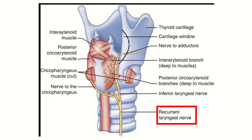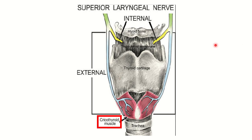In this picture we can see the cricothyroid muscle — the muscle that attaches from the cricoid cartilage to the thyroid cartilage. We can see it is supplied by a nerve that arises from the superior laryngeal nerve. So the cricothyroid muscle is supplied by the superior laryngeal nerve, which is another branch of the vagus nerve.